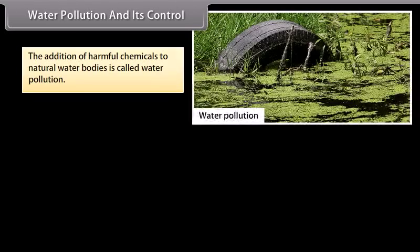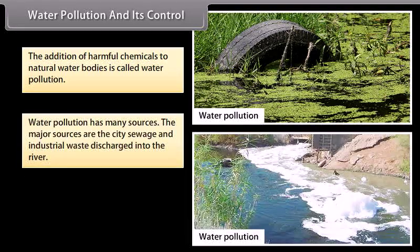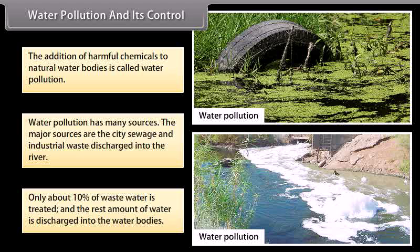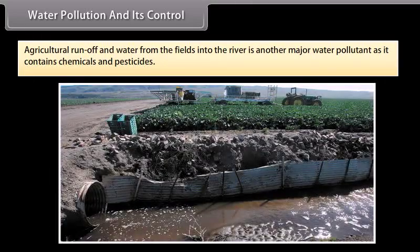The addition of harmful chemicals to natural water bodies is called water pollution. Water pollution has many sources. The major sources are city sewage and industrial waste discharged into rivers. Only about 10% of wastewater is treated, and the rest is discharged into water bodies. Agricultural runoff from fields into rivers is another major water pollutant, as it contains chemicals and pesticides.